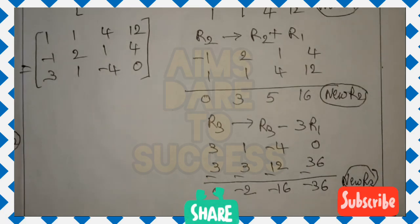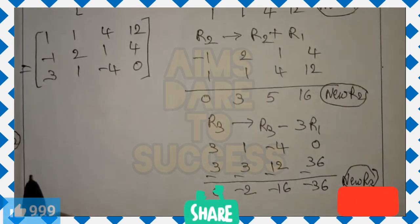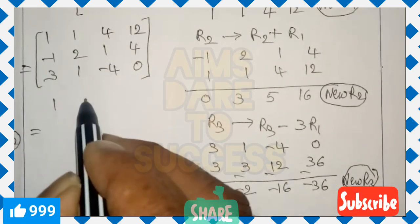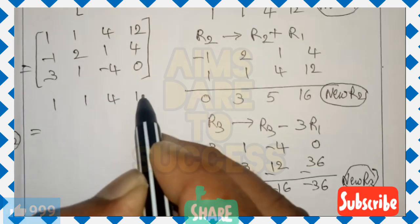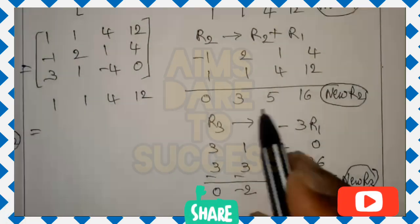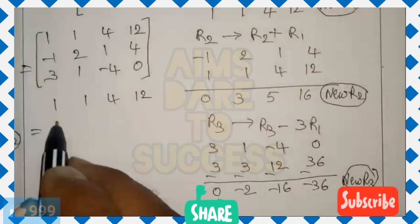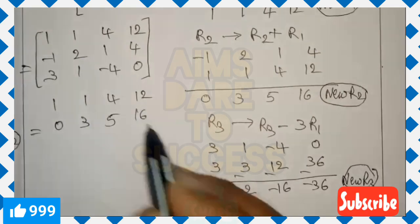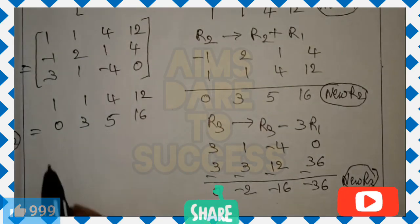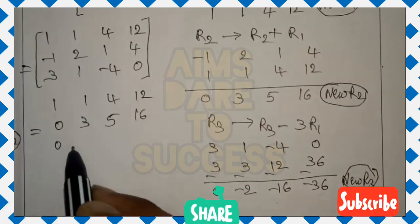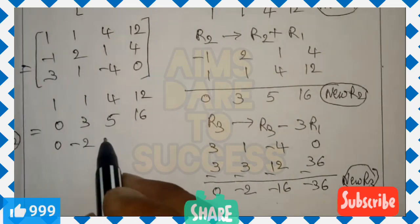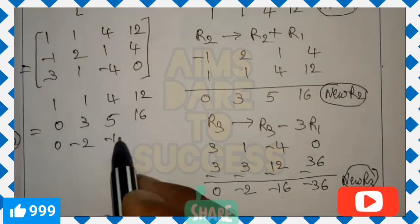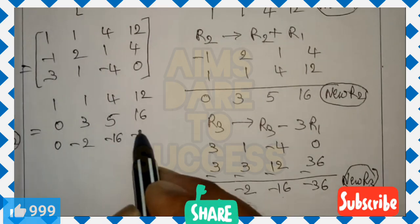After getting the new R2 and new R3, we rewrite the matrix. R1 stays as (1, 1, 4, 12). New R2 is (0, 3, 5, 16). New R3 is (0, -2, -16, -36). We have achieved 1, 0, 0 in the first column.